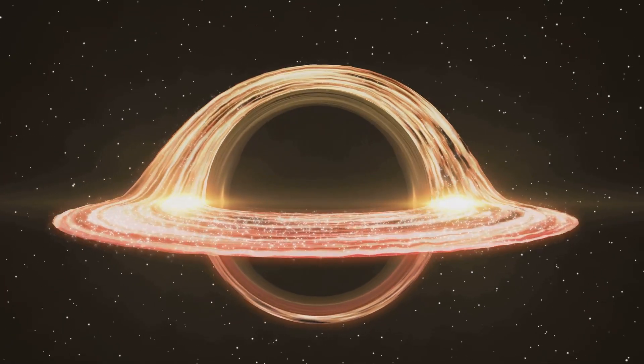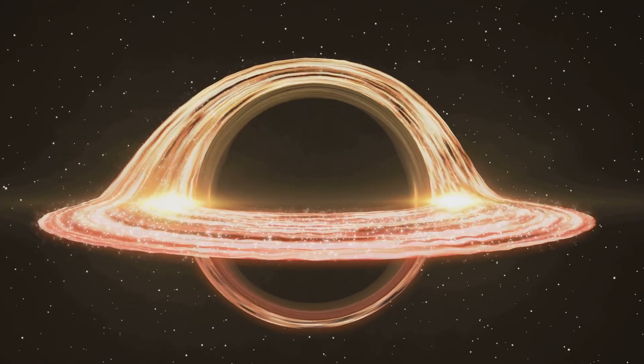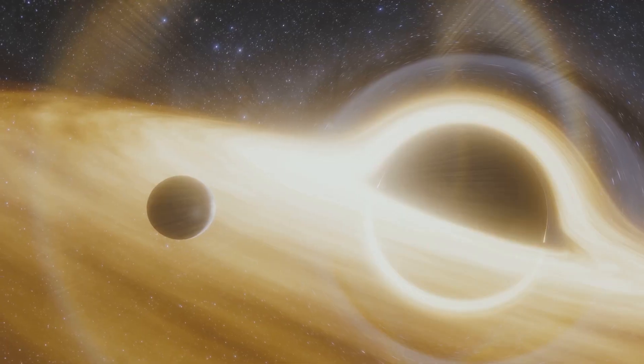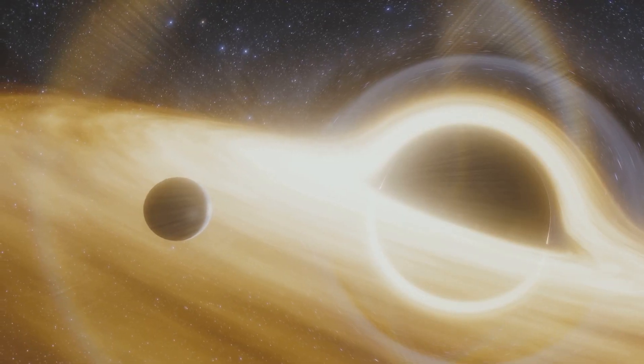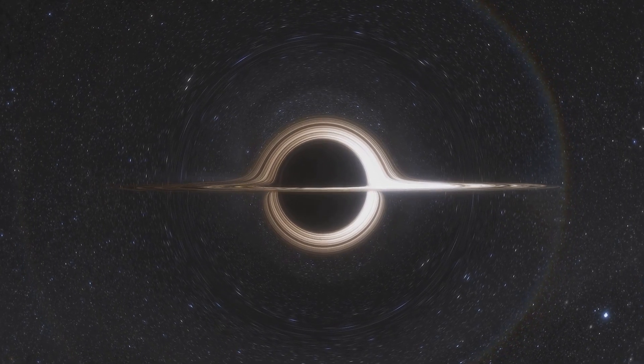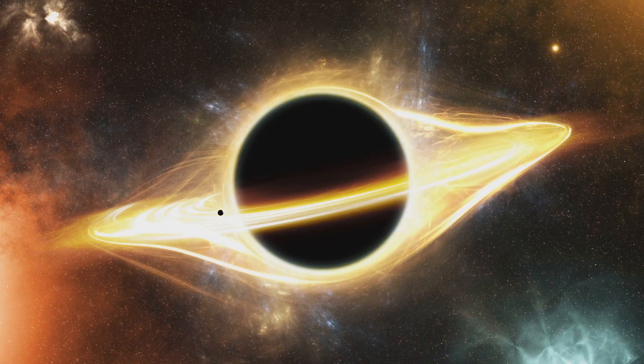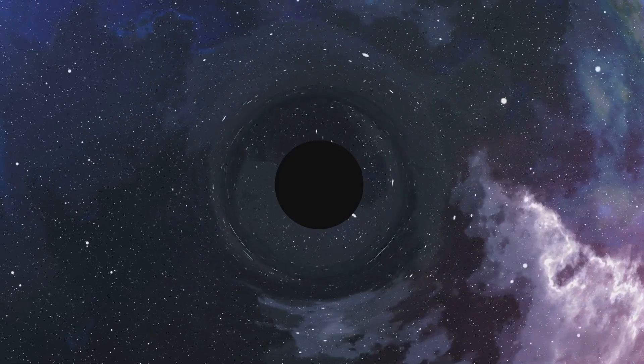The event horizon is a critical concept in understanding black holes. It's a region in space-time where gravity's influence becomes absolute. Imagine a spacecraft approaching the event horizon of a black hole. As it gets closer, the pull of gravity intensifies. The spacecraft would experience spaghettification due to extreme tidal forces. The gravitational gradient from head to toe would be immense. The spacecraft would be stretched and compressed, resembling a strand of spaghetti. Even light cannot escape the event horizon. This is why black holes appear black.